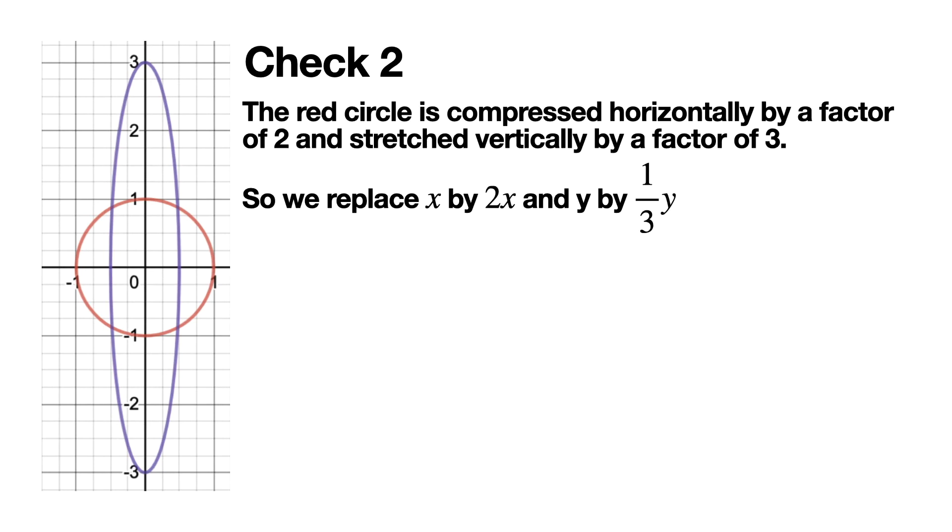We begin by noting what is happening to the red circle in order to make it into the purple ellipse. The red circle is compressed horizontally by a factor of 2 and stretched vertically by a factor of 3. In other words, the width of the purple ellipse is twice as small as the red unit circle and the height is three times as tall. Therefore we replace x by 2x, compressing it horizontally, and y with (1/3)y, stretching it vertically. This is the unit circle, and we just do the replacements and substitute, and that's the equation for the ellipse.